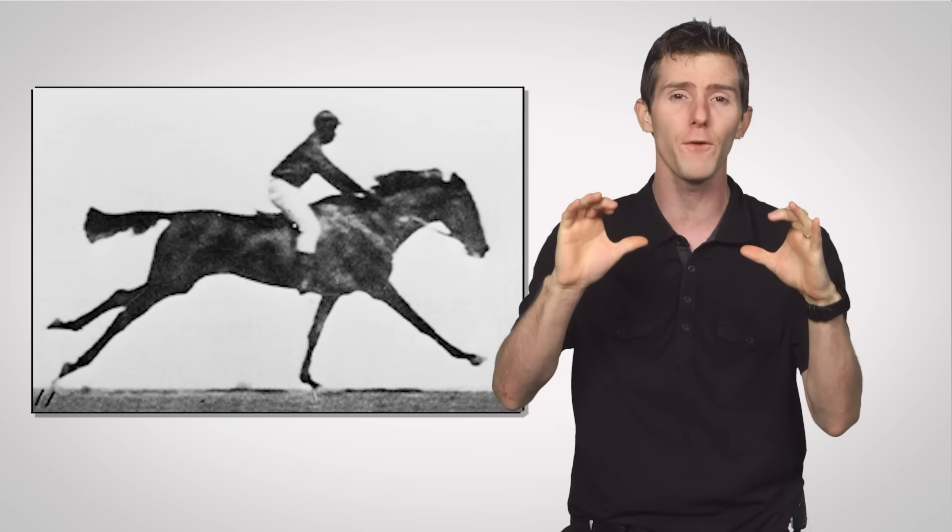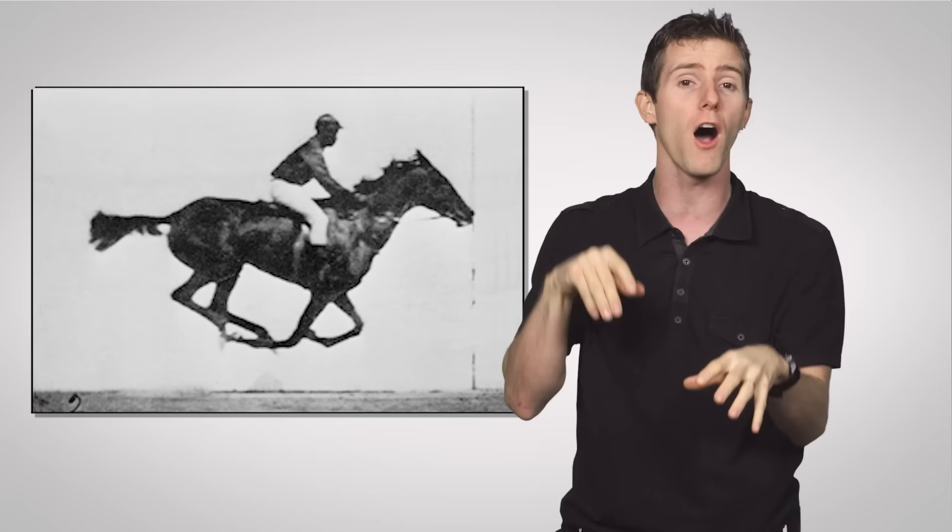But how did it all begin? Well, it sort of started when a photographer named Edward Muybridge, apparently they didn't have normal spelling back in 1872, took a series of still photographs that proved once and for all that horses take all four feet off the ground while galloping, finally settling one of the great debates of the time.